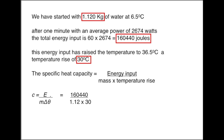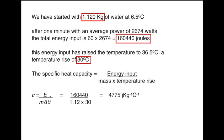Substituting the figures for the measurements we have taken gives us this equation, which calculates to 4775 joules per kilogram per degree Celsius.